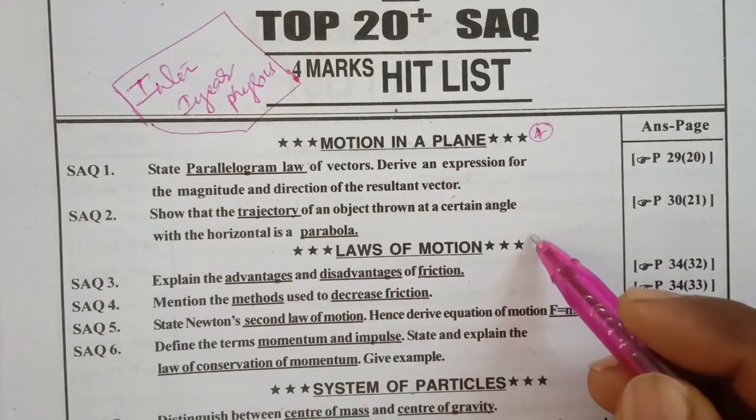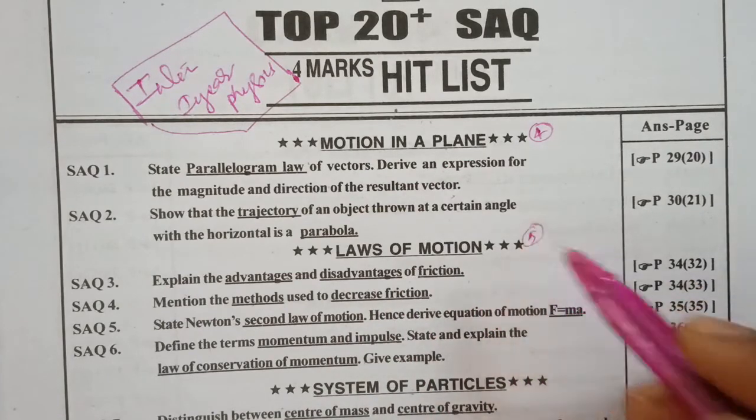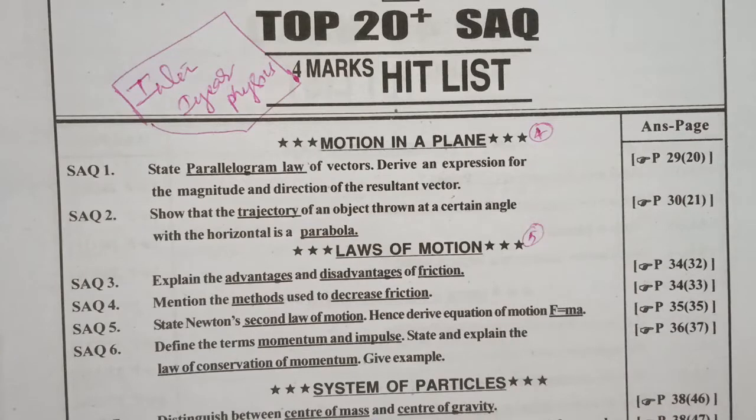Laws of motion. This is the fifth chapter. In this, just four questions are very gunshot questions. First one: explain the advantages and disadvantages of friction.